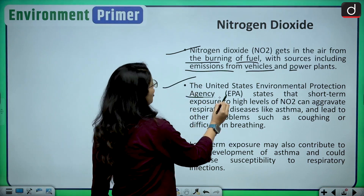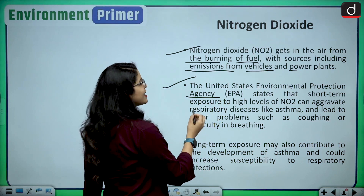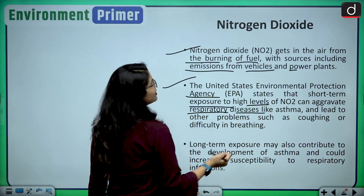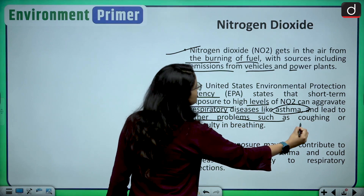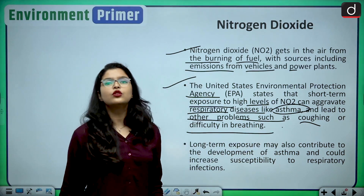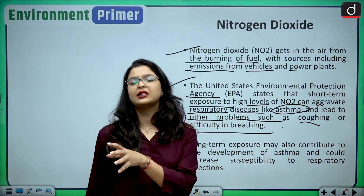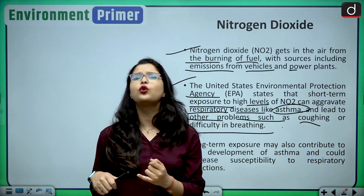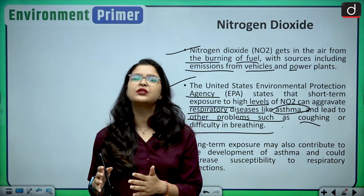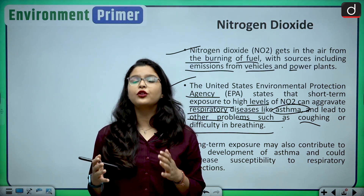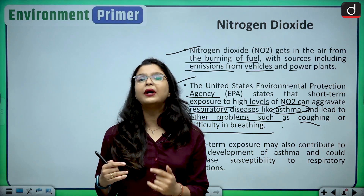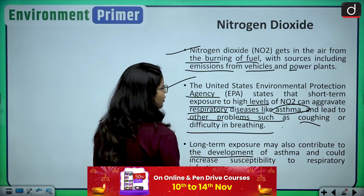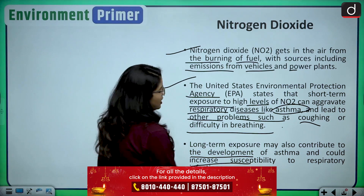The United States EPA states that short-term exposure to high levels of nitrogen dioxide can aggravate respiratory diseases like asthma and lead to problems such as coughing or difficulty in breathing — including runny nose, cold, sore throat. Long-term exposure to nitrogen dioxide may also contribute to the development of asthma and could increase susceptibility to respiratory infections.